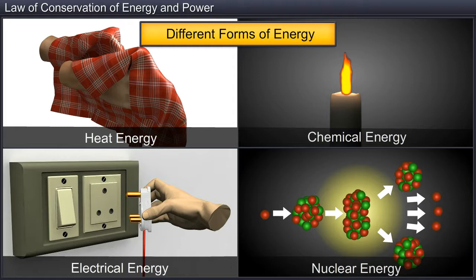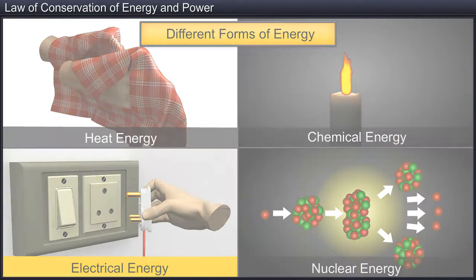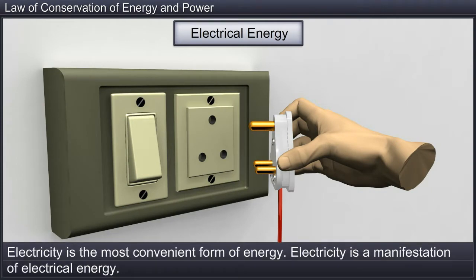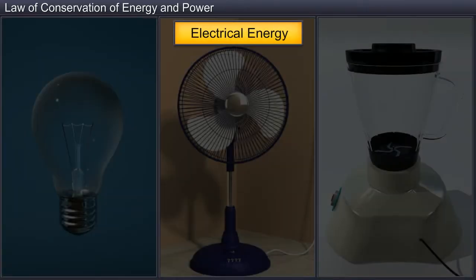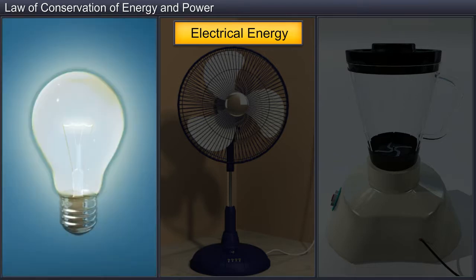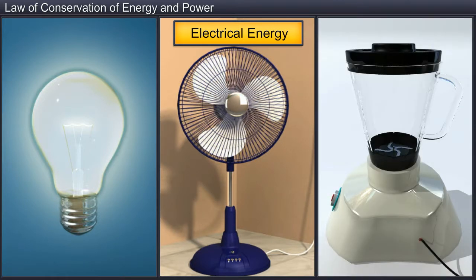Now let's understand electrical energy. Electricity is the most convenient form of energy. Electricity is a manifestation of electrical energy and is responsible for running many of the devices in our daily lives such as electric bulbs, fans, grinders, etc.